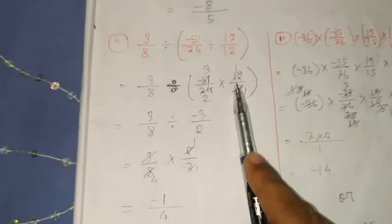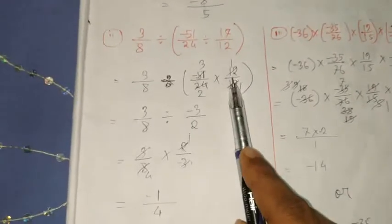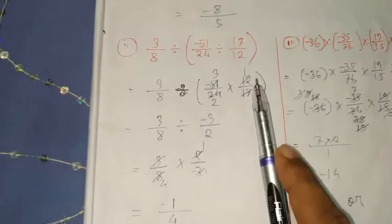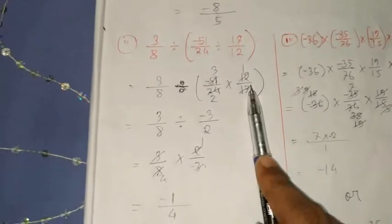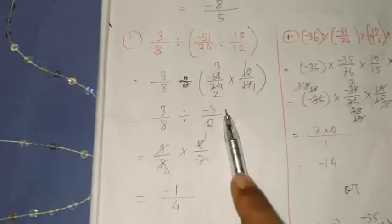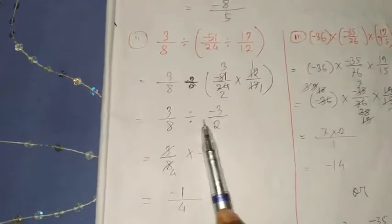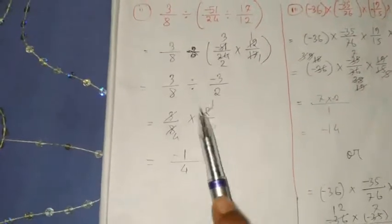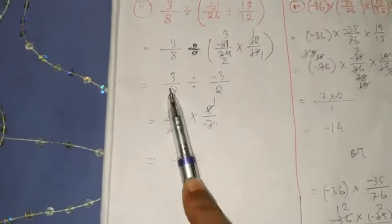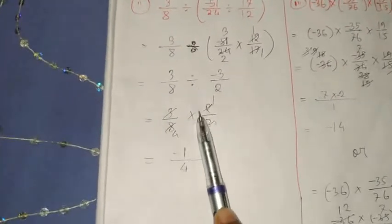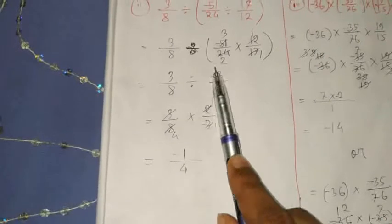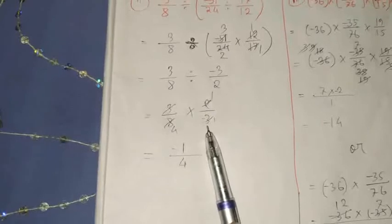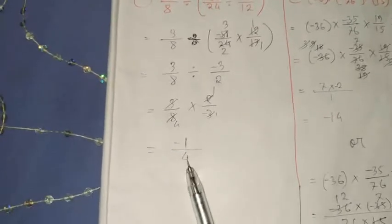We need to divide the numerator and denominator by common factors. We get 3 by 8 divide minus 3 by 2. Here also, change the division sign and take the reciprocal of minus 3 by 2, which gives 2 by minus 3. The answer is minus 1 by 4.